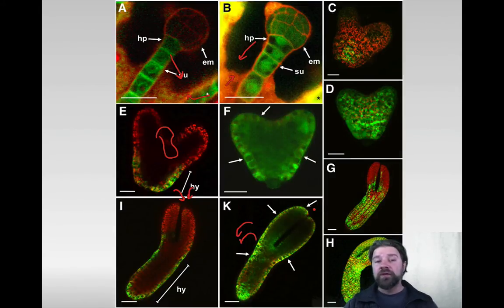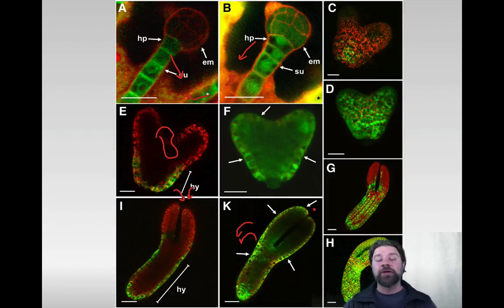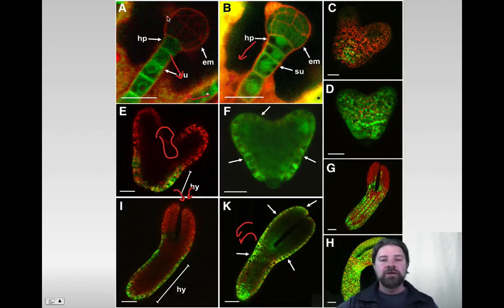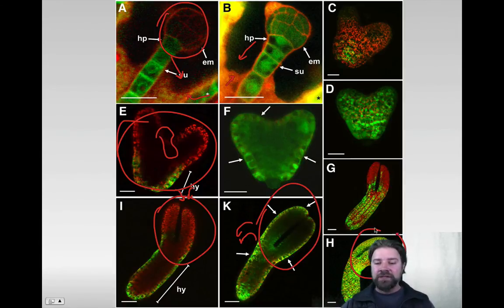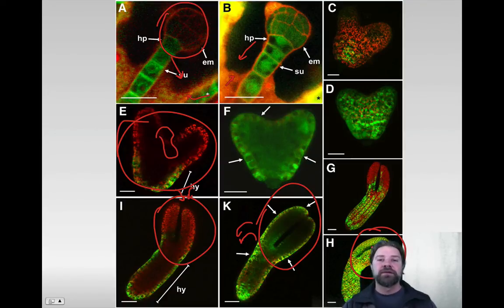Some of the research we do in botany involves tagging plant parts with green fluorescent protein. Here we can see various stages involved in growth - the round stage of the growing embryo, the heart stage with cotyledons, and the torpedo stage. By genetically enhancing certain types of life forms, we can take a closer look at the interior and see exactly what's going on at a given time.